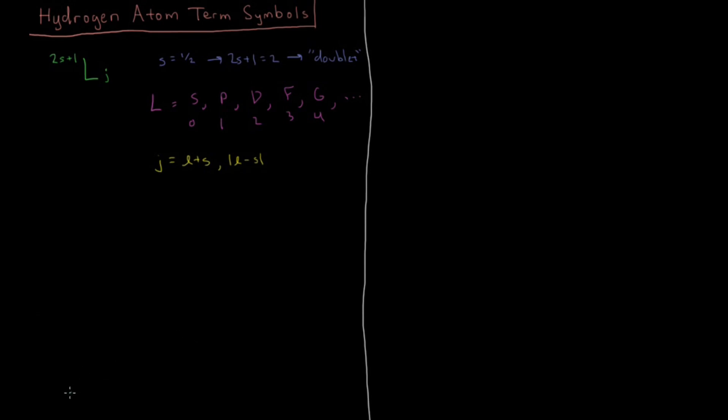So for the 1s orbital, the ground state, our multiplicity is going to be 2. We're in L equals 0, or S, so it's a capital S state. And for J, L plus S and absolute value of L minus S are the same thing. They're both 1 half. So for our ground state, the doublet S 1 half is our only term symbol.